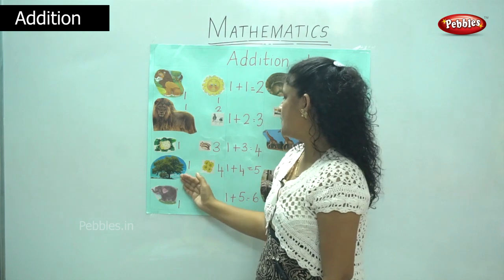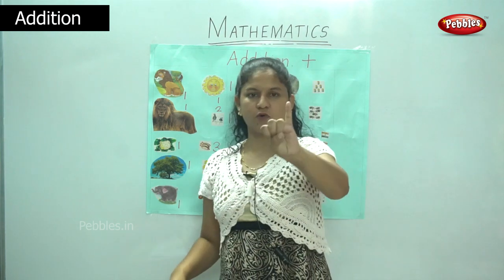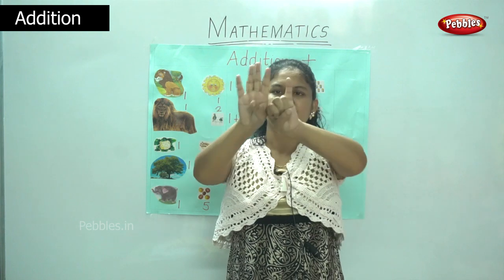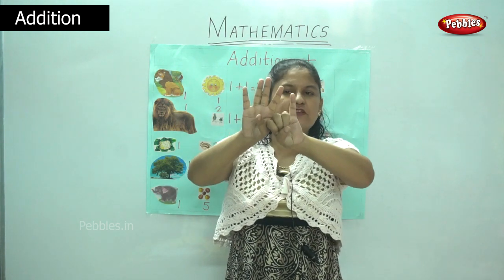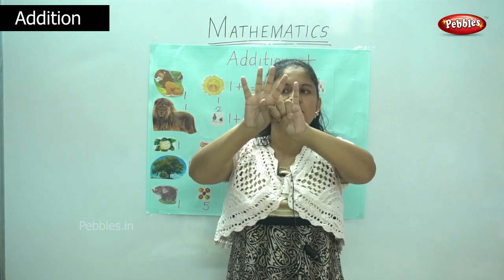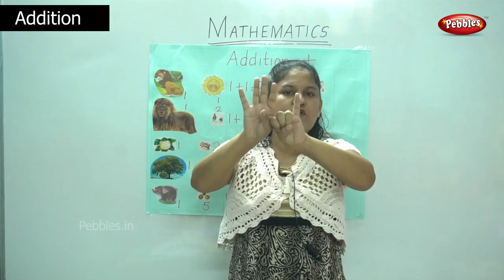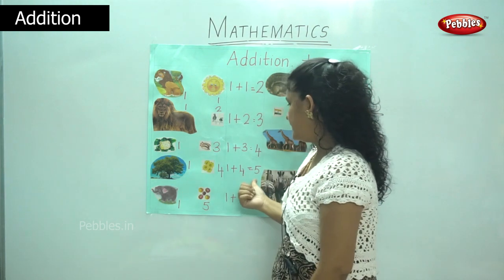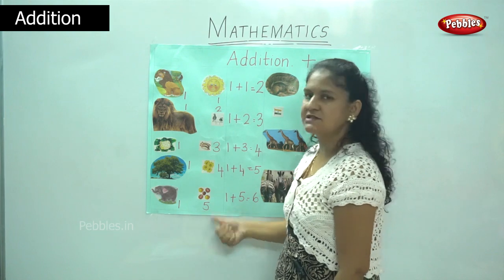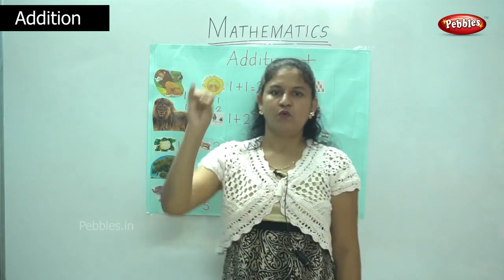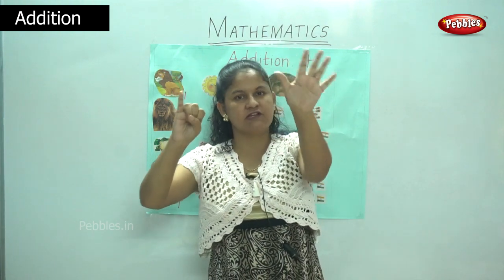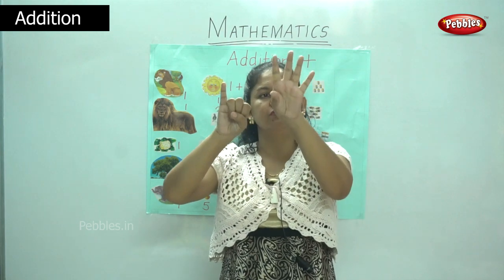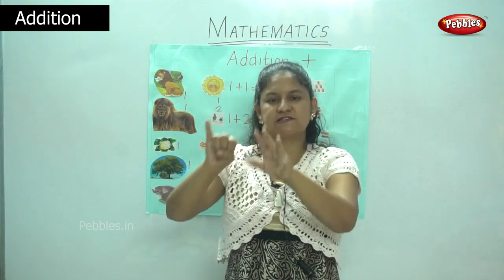Next I have one plus four. So one plus one, two, three, four — I am going to add up all the fingers — one, two, three, four, five. That gives me number five. Next is one plus five — I have five fingers on this hand — so one, two, three, four, five, six. That gives me number six.